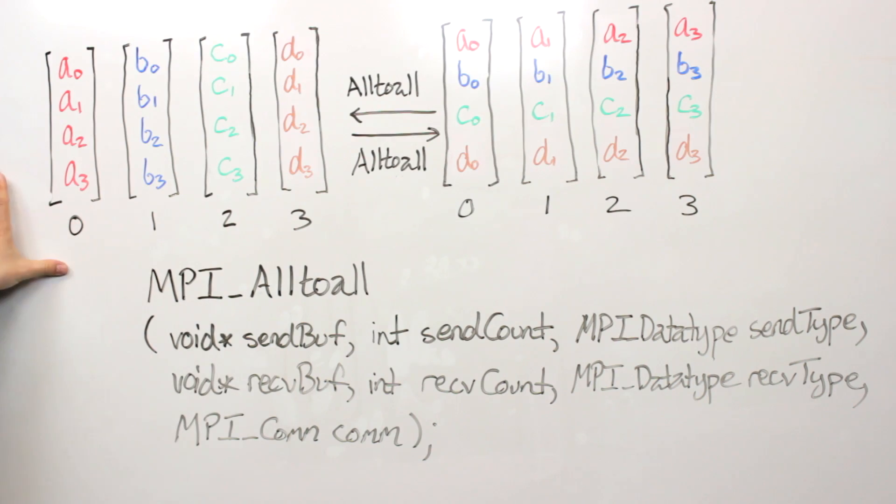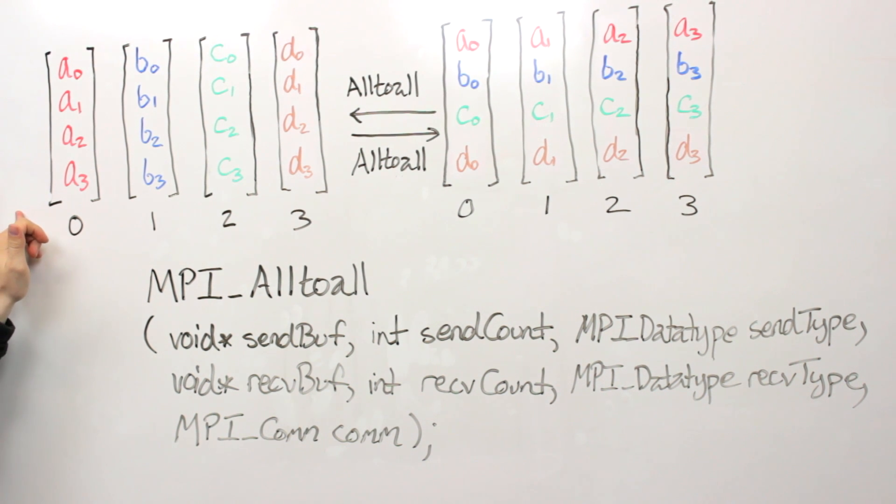So I have a diagram set up for the case where we have four processes, and suppose that on each process we have some array of, say, double precision floating point numbers.